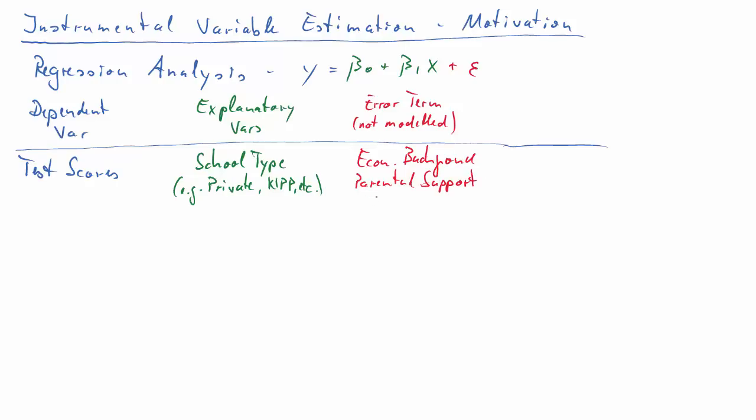Perhaps economic background of students, perhaps the amount of parental support they get, and perhaps other factors. And these are factors which can't always be measured, and therefore they are not part of the explanatory variables. Let's say we are interested in whether, and if so, how the school type has an impact on the test scores of a particular student.